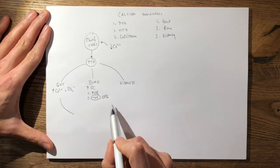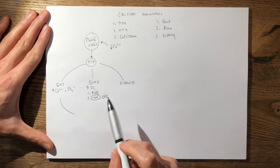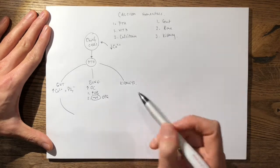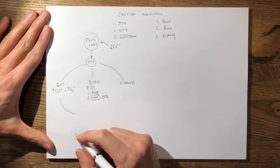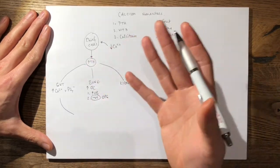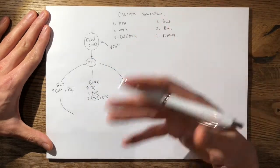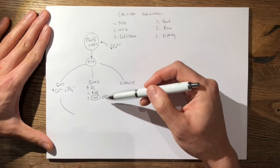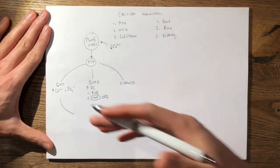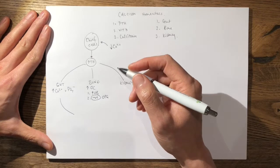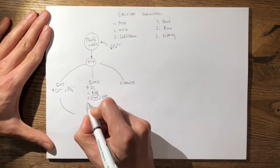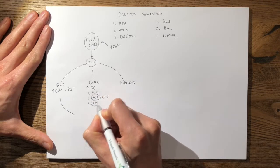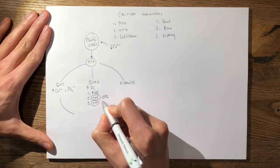OPG is a competitive inhibitor of RANK ligand, which occurs endogenously and regulates osteoclastogenesis in the body. By inhibiting OPG, you get more osteoclast differentiation and maturation. The third mechanism is that parathyroid hormone has a positive effect — it upregulates RANK ligand.